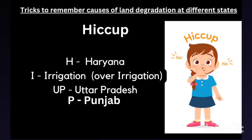The first shortcut is 'HICCUP.' Here H refers to Haryana, I refers to irrigation, U refers to Uttar Pradesh, and P refers to Punjab. In Haryana, Uttar Pradesh, and Punjab, over-irrigation is the reason for land degradation.